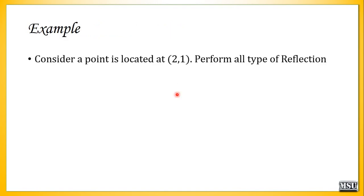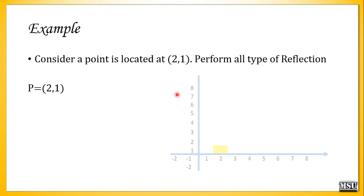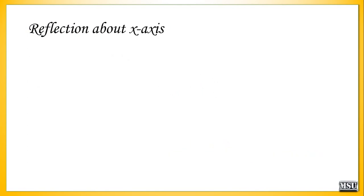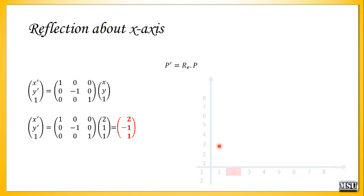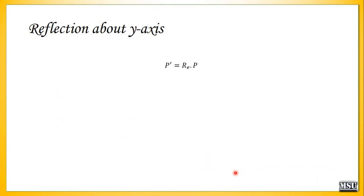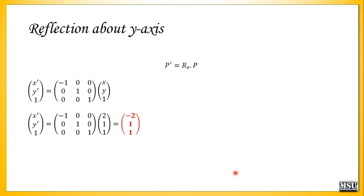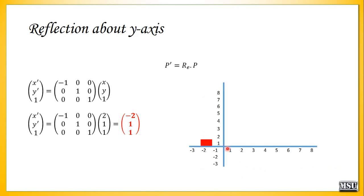Consider a point located at (2, 1). Perform all types of reflection. P is located at (2, 1). We will perform reflection about the x-axis — we know the formula: x' equals x and y' equals minus y. Initially the point is at (2, 1); after reflection it is located at (2, -1), and the point is now translated to the fourth quadrant. For reflection about the y-axis, we change the sign of the x value, so the point is now at (-2, 1). The point is located at the second quadrant.